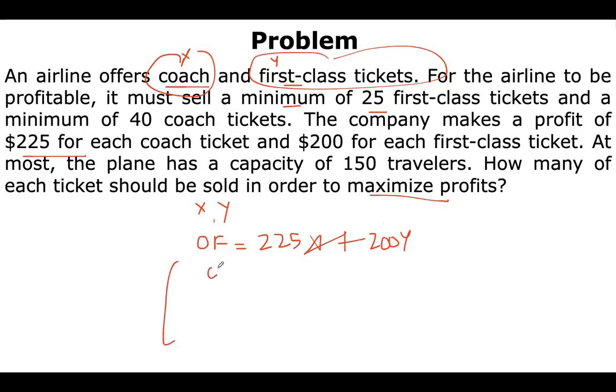Now let's come to our constraint equations. Our first constraint: for the airline to be profitable, it must sell a minimum of 25 first-class tickets. So y should be greater than or equal to 25. Similarly, our second constraint equation would be minimum of 40 coach tickets, so x is greater than or equal to 40.